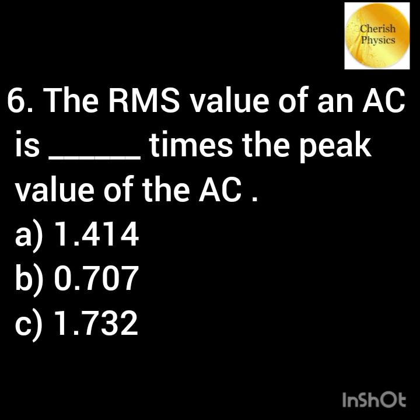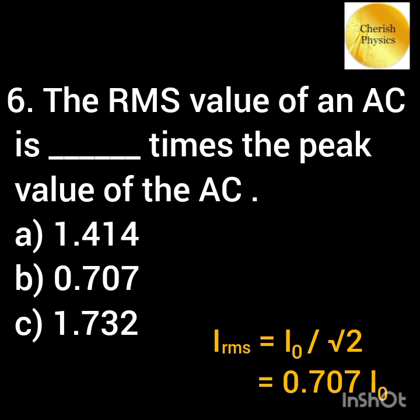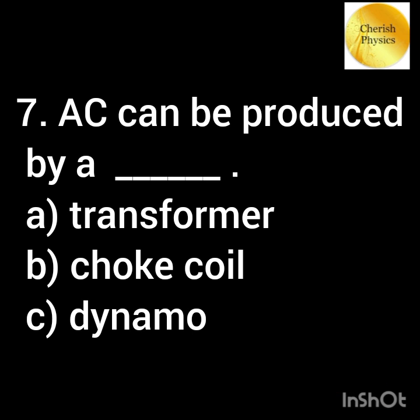The rms value of an AC is dash times the peak value of the AC. Alternating current can be produced by dash.